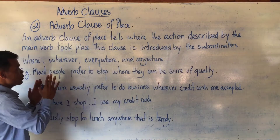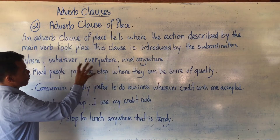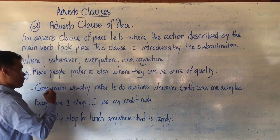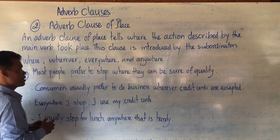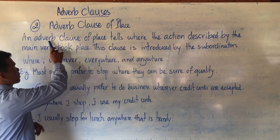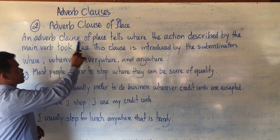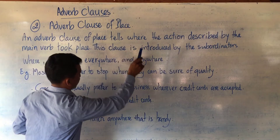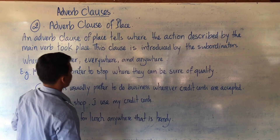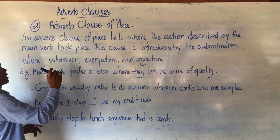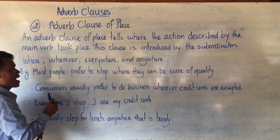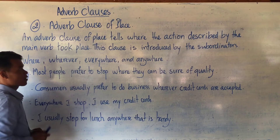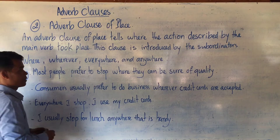When you see the subordinator or clause marker in a sentence, and based on the definition that an Adverb Clause of Place tells where the action described by the main verb takes place, they are considered as Adverb Clause of Place.